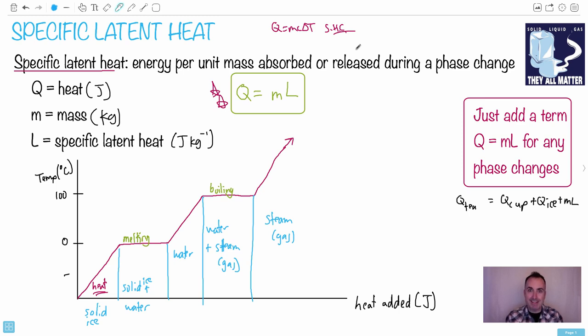If you're going to deal with these kinds of questions in an IB format, you're probably just going to need to think about which one changed phase, add a Q equals ML to that side of the Q lost equals Q gain equation, and there you go.